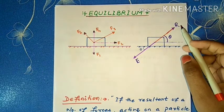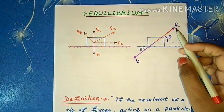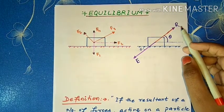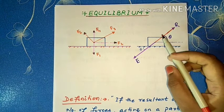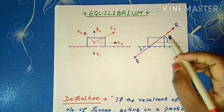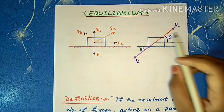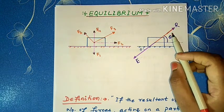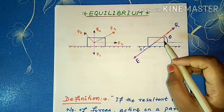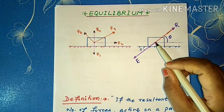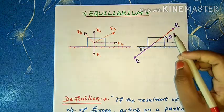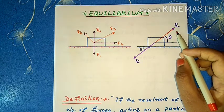कई forces का यह resultant state of rest और uniform motion में changes का कारण हो सकता है। यह resultant force, state of rest को motion में और uniform motion को rest में ला सकती है — that is, resultant acts as a disturbing force and resultant causes unbalance in the system.